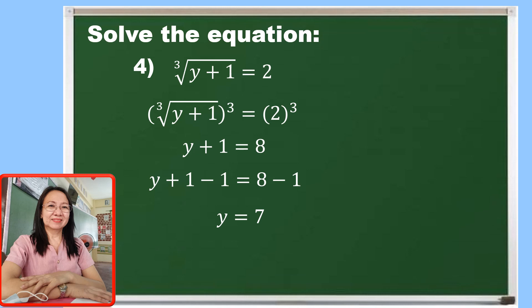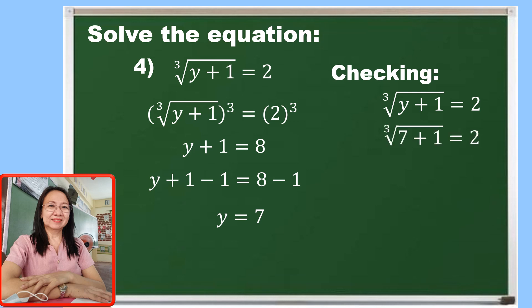Let us check if it satisfies the given equation. Substitute 7 for y so that we have the cube root of 7 plus 1 is equal to 2. So 7 plus 1 is 8, and the cube root of 8 is 2. Therefore, 2 is equal to 2. So we have to accept the value of y as 7.